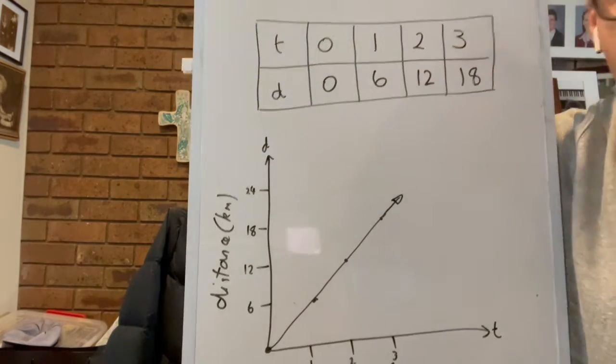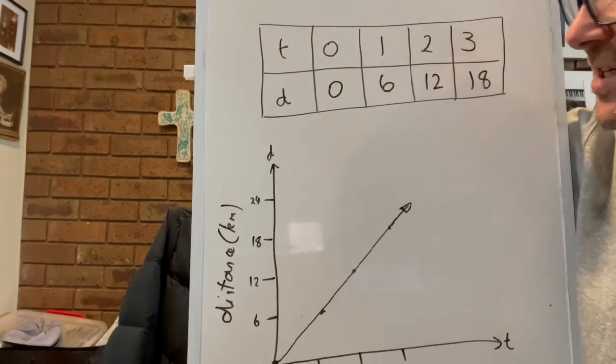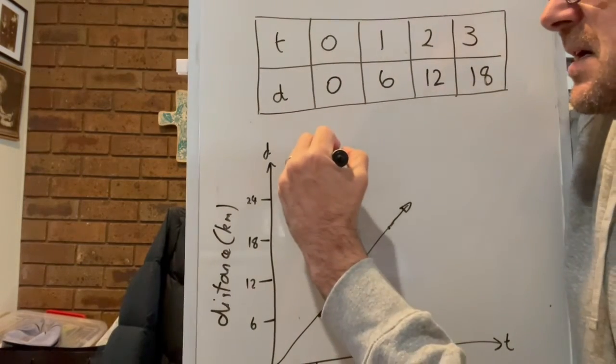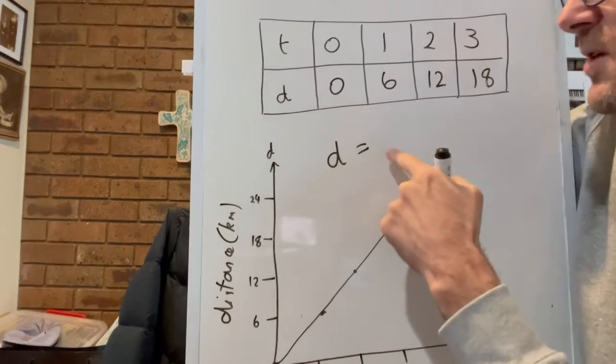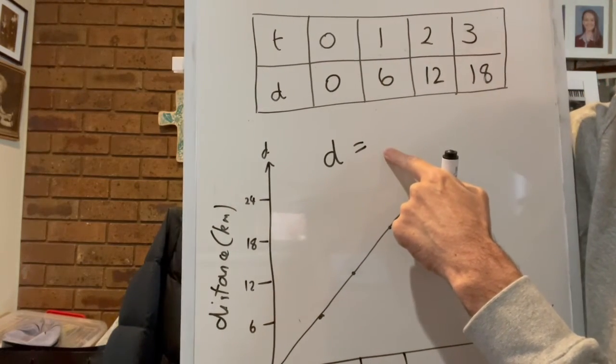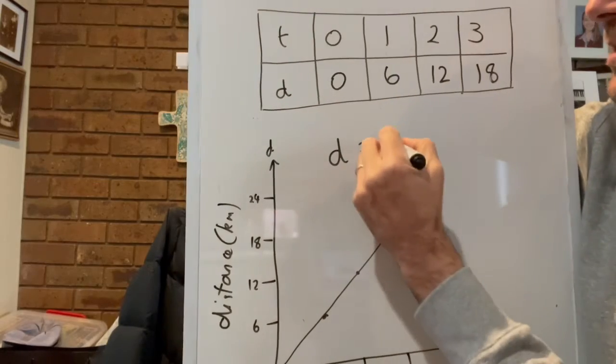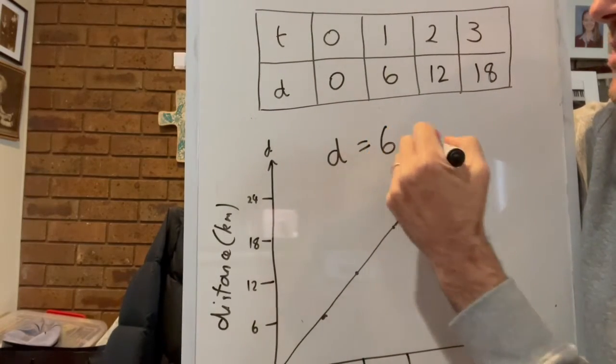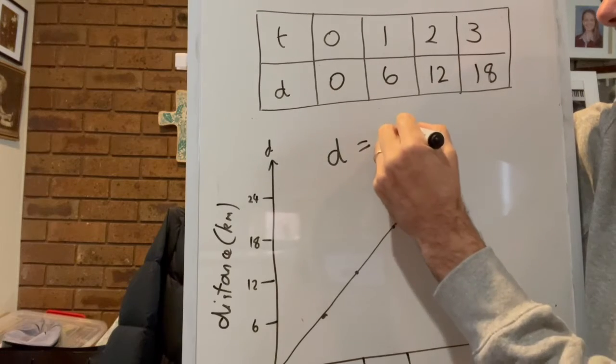The question then says write a rule linking d and t. So d is going to equal something relevant to t. So we know that the distance is six, so it's going to be six times by the time, so 6t.